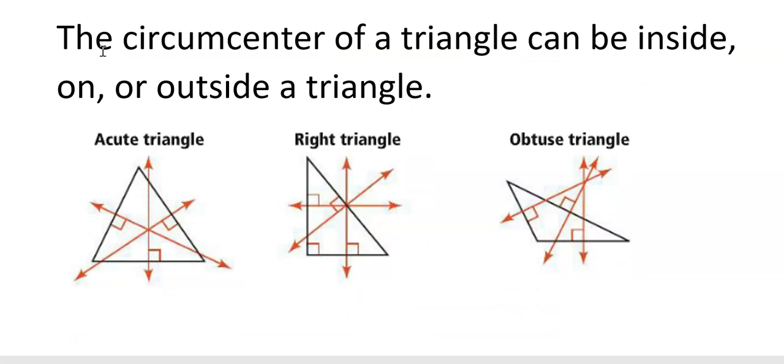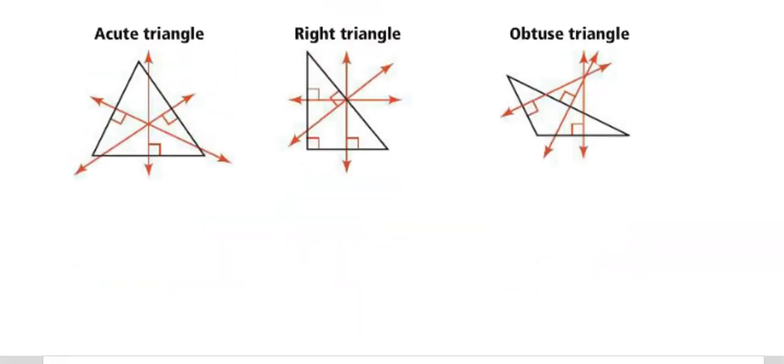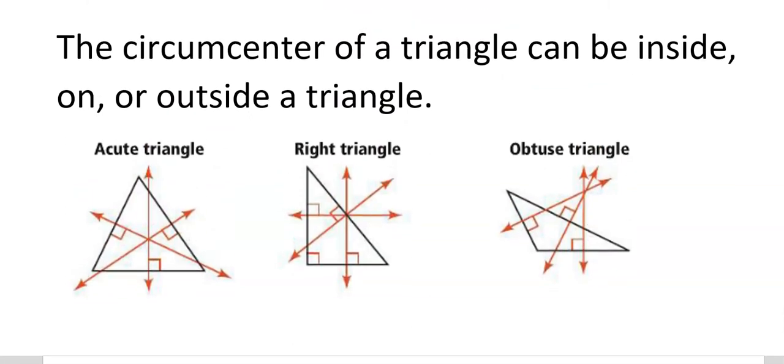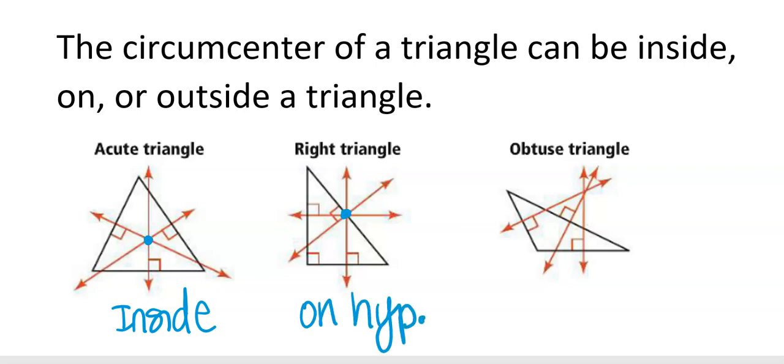Make sure you write a note about this. The circumcenter can be inside, outside, or on. So tomorrow, we'll make note of this again. Acute triangles, this circumcenter is inside. For a right triangle, notice the circumcenter is on the hypotenuse, or on that longest side opposite the right angle. And for an obtuse triangle, it is outside. And we're going to do all of these tomorrow as well.